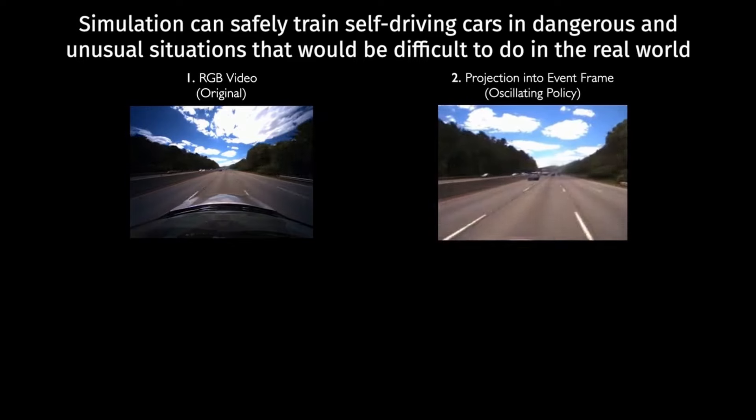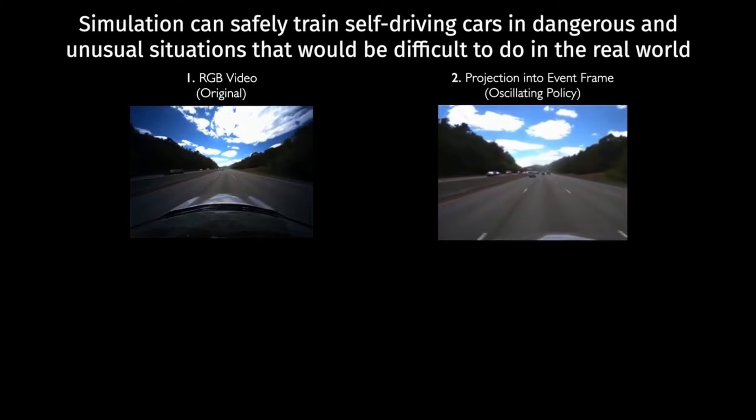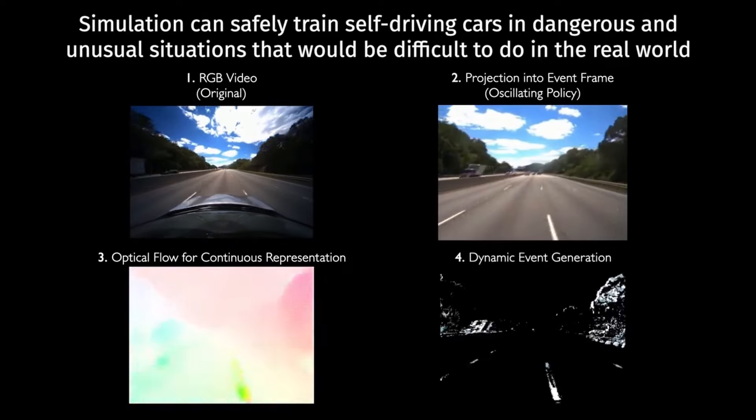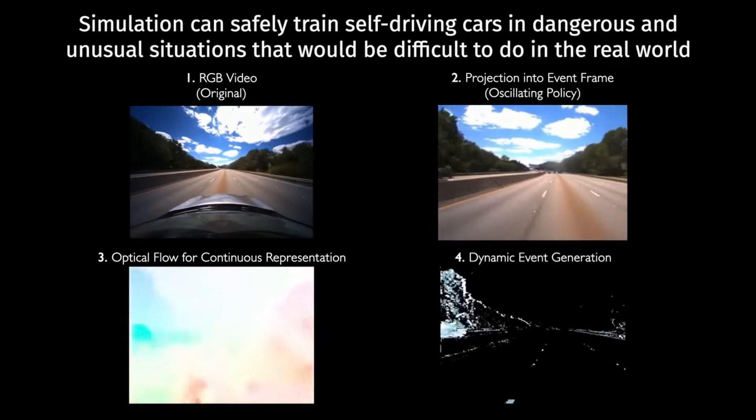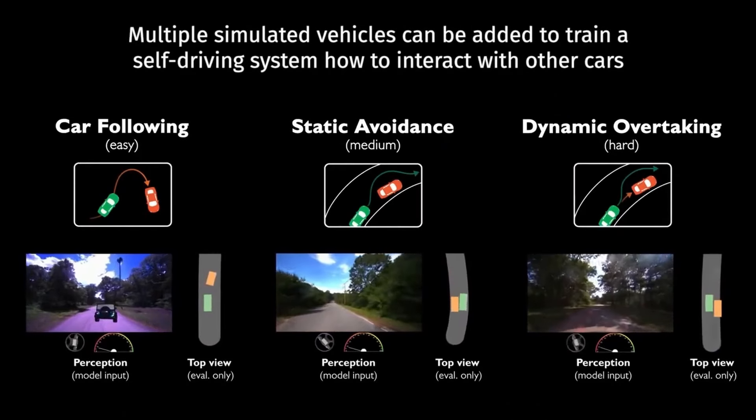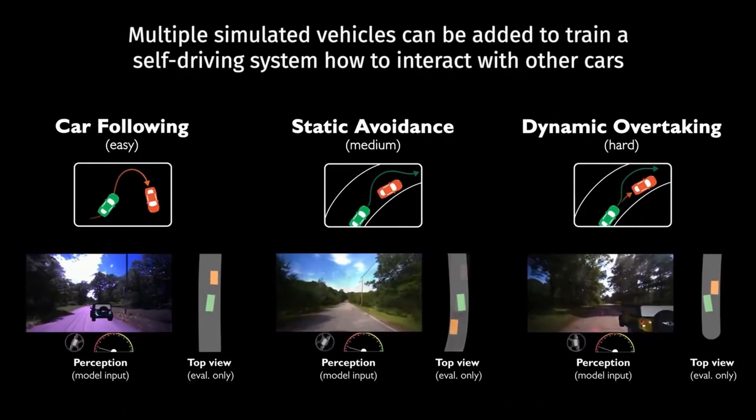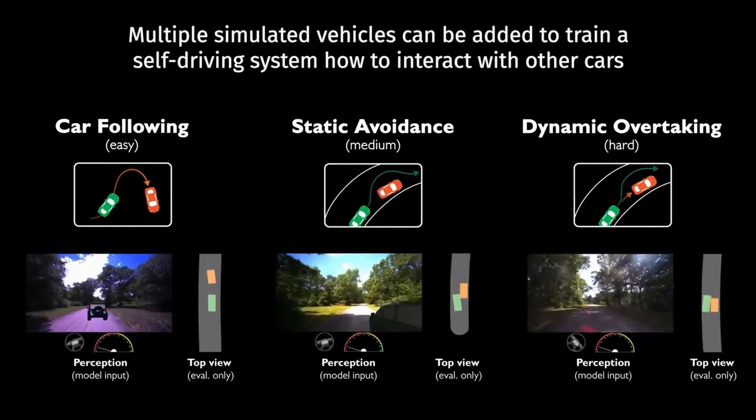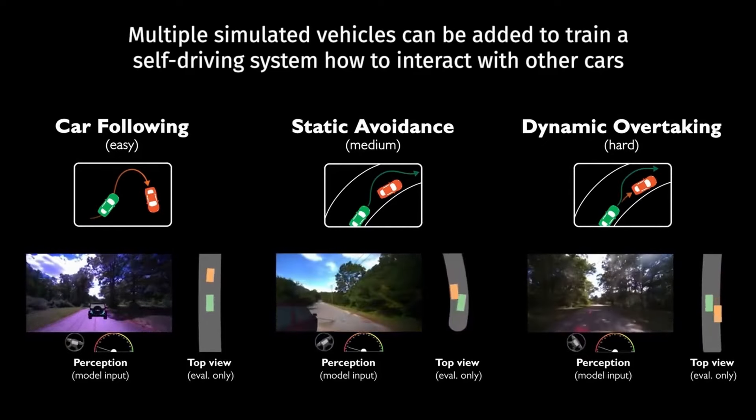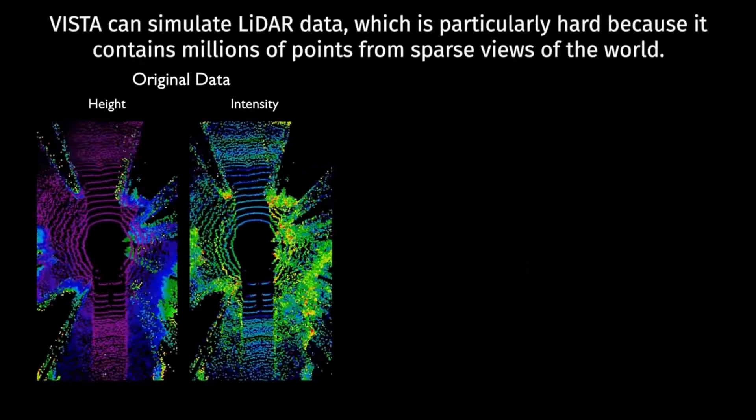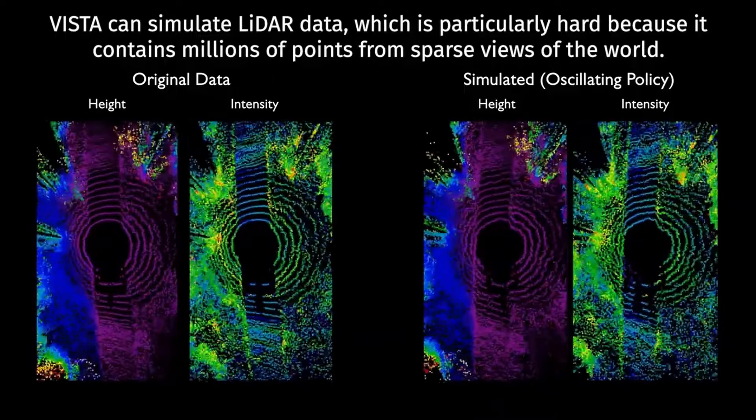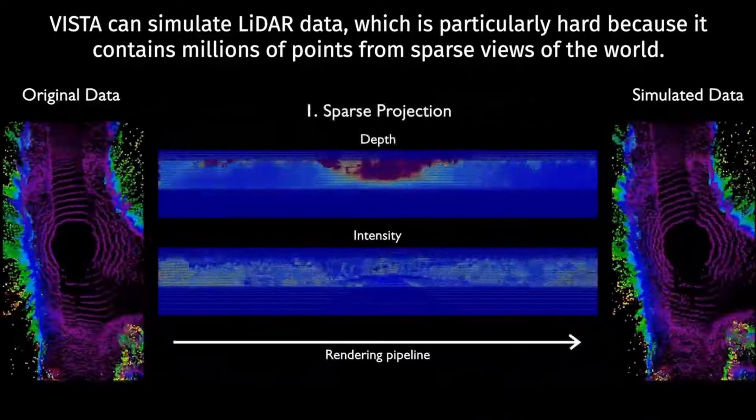To that end, scientists from MIT's Computer Science and Artificial Intelligence Laboratory created Vista 2.0, which is a data-driven simulation engine where vehicles can learn to drive in the real world and recover from near-crash scenarios. What's more is that all of the code is being open-sourced to the public. Enter Vista 2.0, a data-driven system that can simulate complex sensor types in massively interactive scenarios and intersections at scale. With much less data than previous models, the team was able to train autonomous vehicles that could be substantially more robust than those trained on large amounts of real-world data.